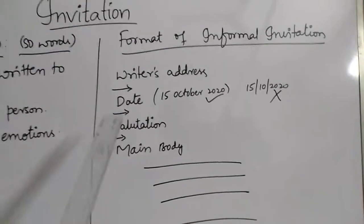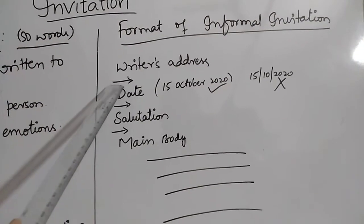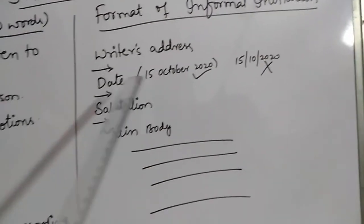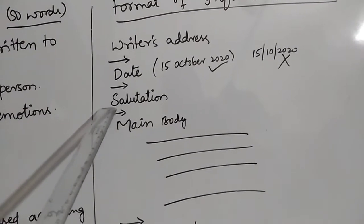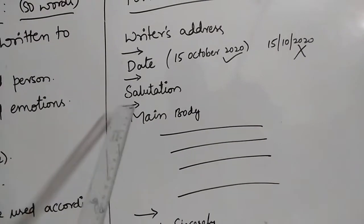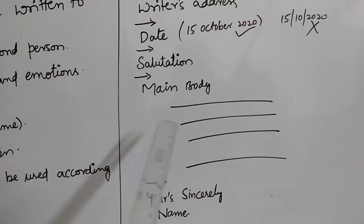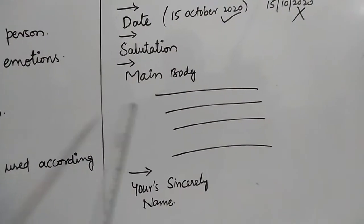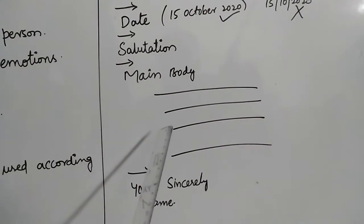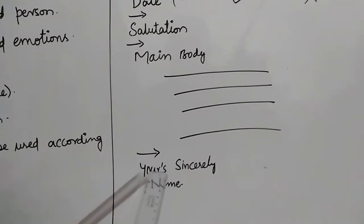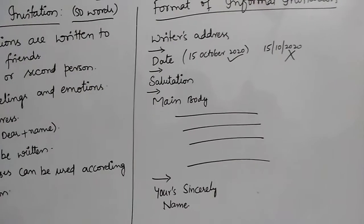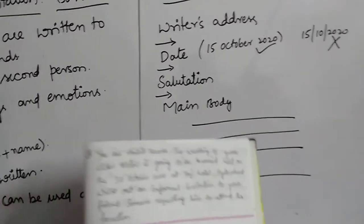Let me repeat the format once more: first, writer's address; leave a space; write the date in the correct format; leave a space; write salutation — Dear followed by the name given in the question; leave a space; write the main body including the purpose, name, date, place, and venue; leave a space; then write 'Yours sincerely' and your name. This is the format of informal invitation.